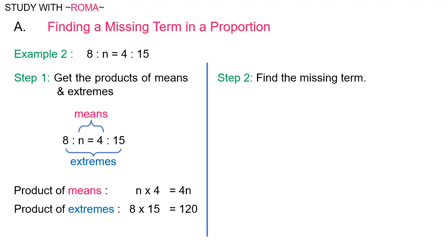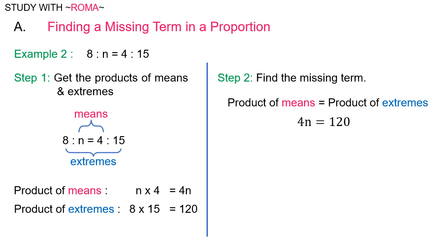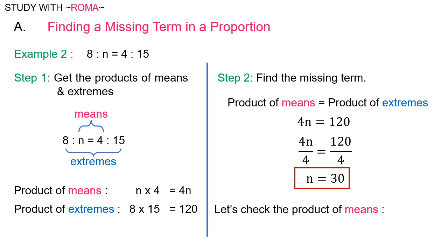Step 2: Find the missing term. The product of means is equal to the product of extremes. Therefore, 4n is equal to 120. Divide both sides by 4: 4n divided by 4 is equal to n, and 120 divided by 4 is equal to 30. Therefore, n is equal to 30. Let's check: n times 4 equals 4n, which is 4 times 30, which is equal to 120. Therefore, n is equal to 30.